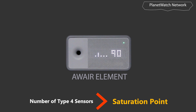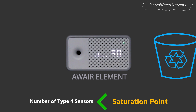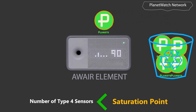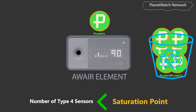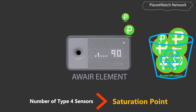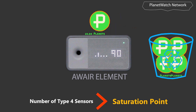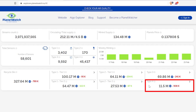Although we passed the saturation point, lately I've been receiving full rewards every day. That's because when the number of sensors was below the saturation point, some tokens from the daily budget were not used and were saved in the recycle bin. Now we are using them, but unfortunately there is not much left. At the time of making this video there is only about 11 million PLANET tokens left in the Type 4 recycle bin, and we are drawing from it every day. At this rate, in less than two weeks this recycle bin will be zero, and as a result we will no longer receive full daily rewards.